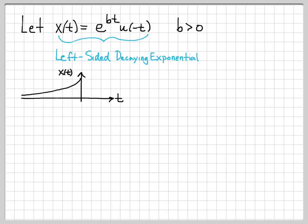So x of t always looks something like this for b greater than 0. It turns off at time 0 and decays to smaller and smaller values to the left or negative time.